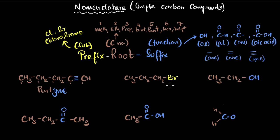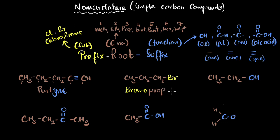For this next example, the first question is: do I find any substituent groups? I do see bromine, so it starts with 'bromo.' Then for the root word I count: one, two, three — three carbons gives 'prop,' so 'bromoprop.' I only have single bonds, no double or triple bonds, and no functional groups, so I end with 'ane.' The name is bromopropane.